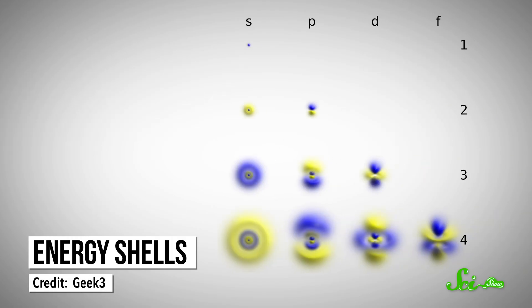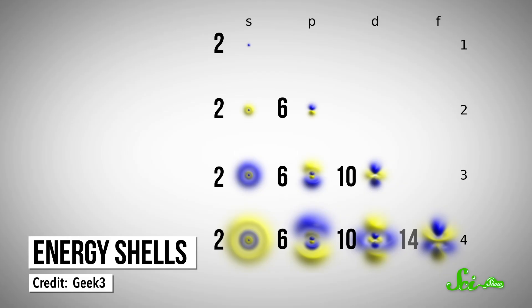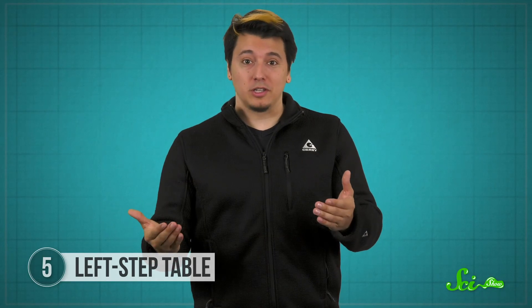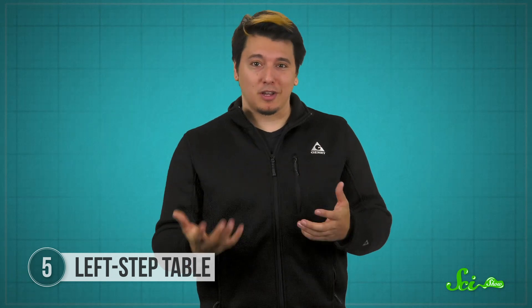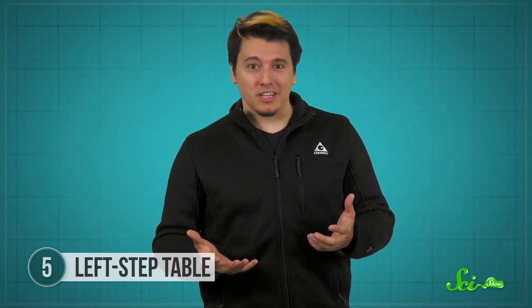As electrons get added to an atom, they fill up shells with these shapes in a specific order. The first two go into an S shell, the second two go into another S shell, the next six go into a P shell, and so forth. Different shells correspond to different energy levels. You can see how this would all get very confusing very quickly.